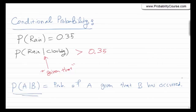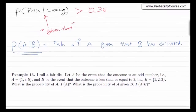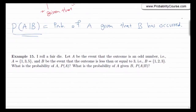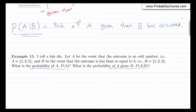Before giving the general formula, I want you to solve this problem: I roll a die. Let A be the event that the outcome is an odd number, and B be the event that the outcome is less than or equal to 3. What is P(A) and what is P(A|B)? I suggest you solve this before watching the rest of the video.